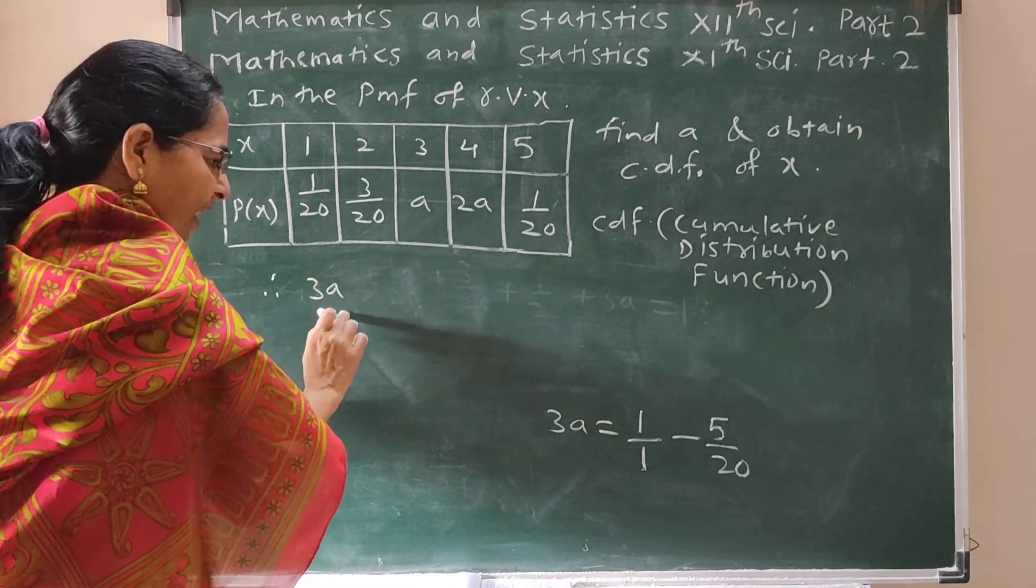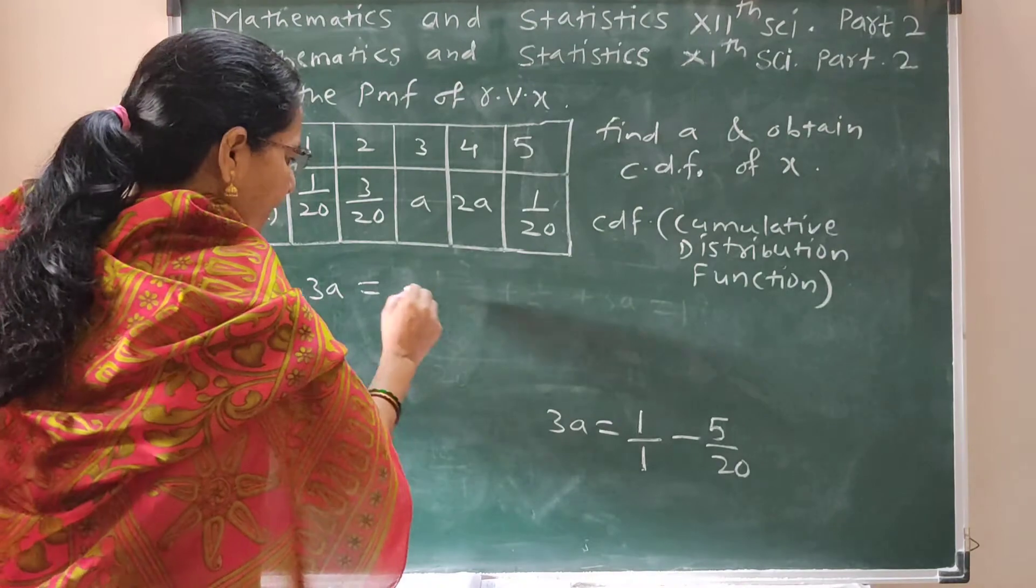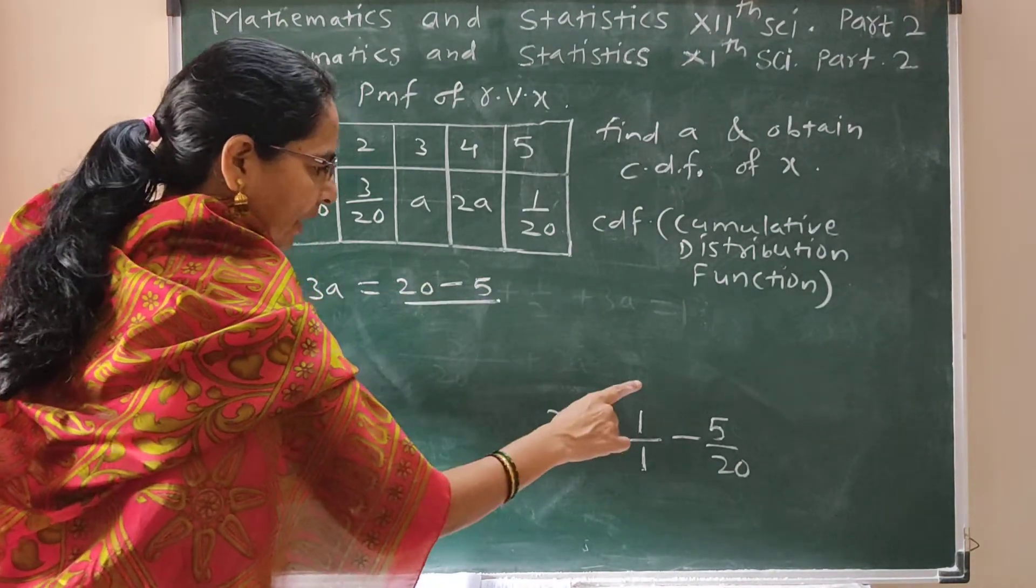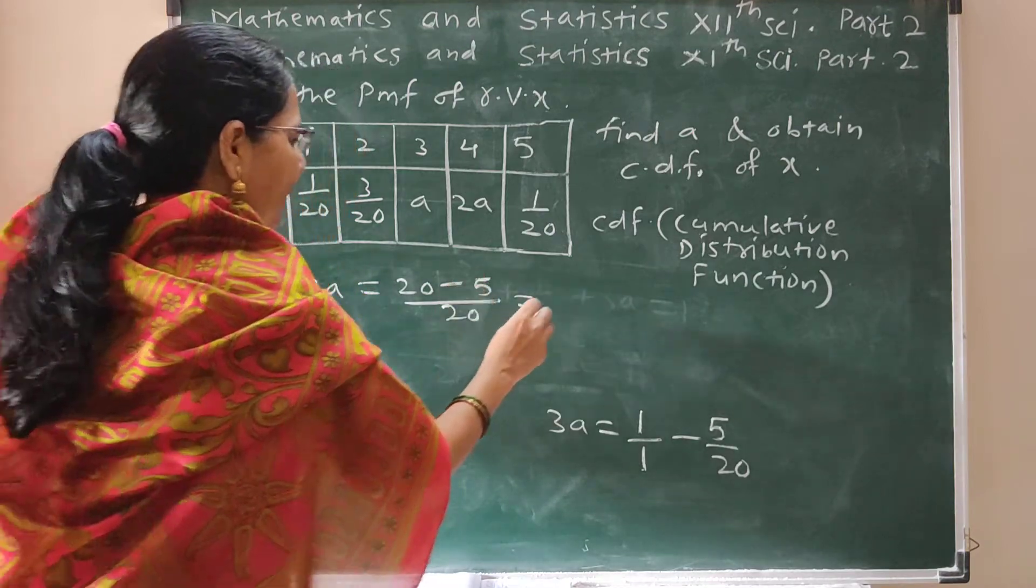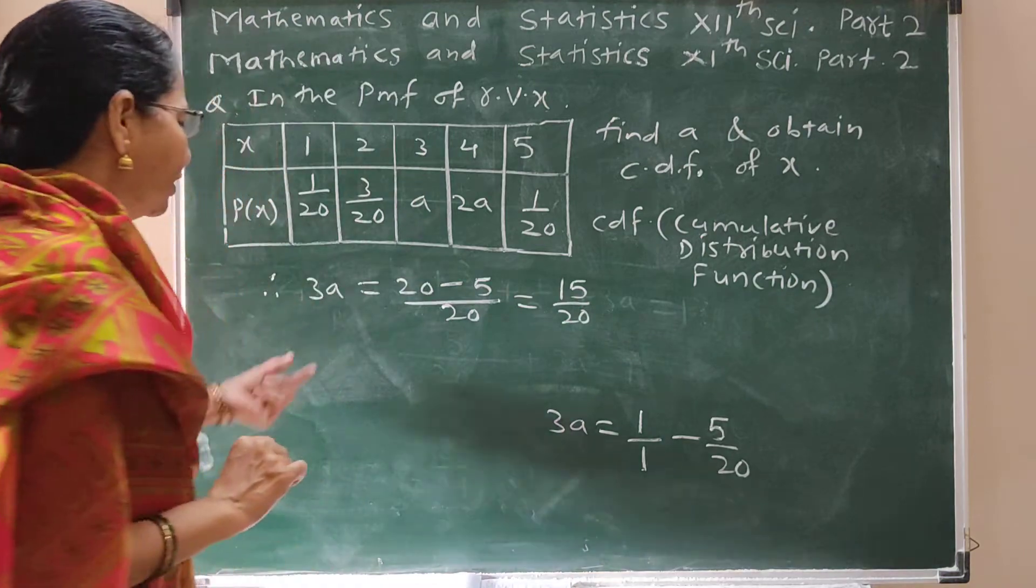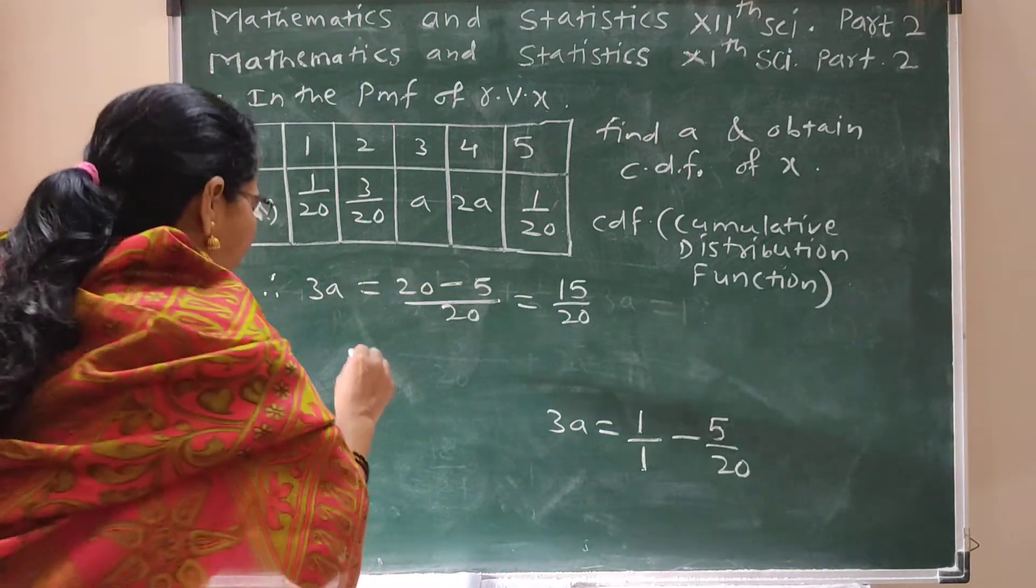Therefore 3A equals - write this 1 as 1 upon 1. This term to this side becomes 1 minus 5 upon 20 equals 3A. So this is 15 upon 20.